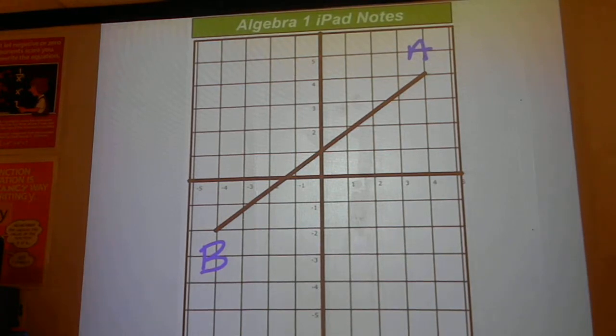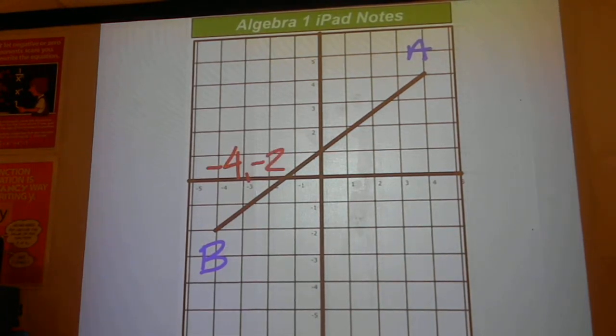Okay, on this one, you're going to find the points first, and this one is negative 4, negative 2, and then we'll have 4, 4 on point A.